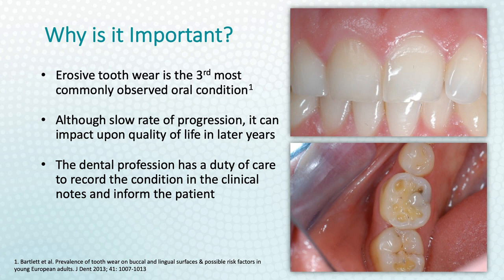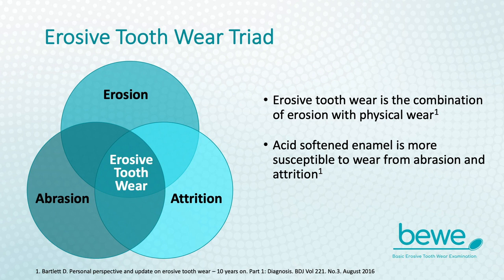Erosive tooth wear is a multifactorial condition resulting in the loss of tooth tissue through erosion with physical wear such as abrasion or attrition. When acids from a diet or intrinsic sources soften the tooth surface, it becomes more susceptible to mechanical wear. Erosive tooth wear includes abrasion and attrition, both of which can in theory work independently but normally occur with erosion. We use the term erosive tooth wear to capture that erosion can be involved, but not always.